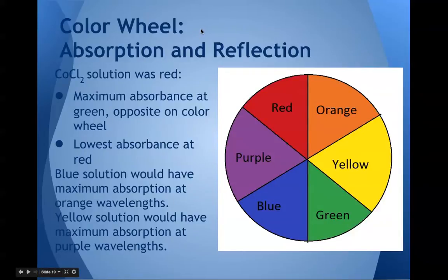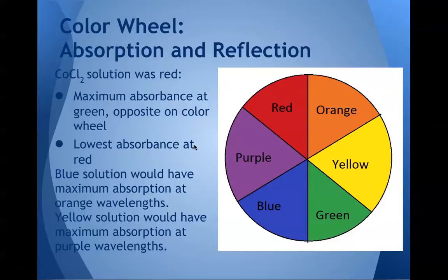Here's the color wheel and how it relates to absorption and reflection. The CoCl2 solution was red, so the maximum absorbance was at green — the opposite color on the color wheel — and the lowest absorbance was at red, which is the color of the solution. This is because our eyes see what color is reflected from the solution, meaning red was not really absorbed and green was the color absorbed the most. Accordingly, a blue solution would have maximum absorption at orange wavelengths, and yellow solutions would have maximum absorption at purple wavelengths.